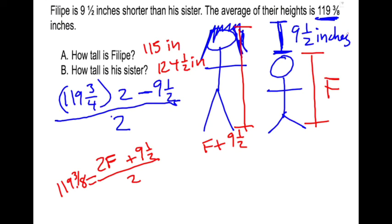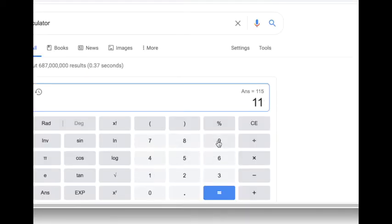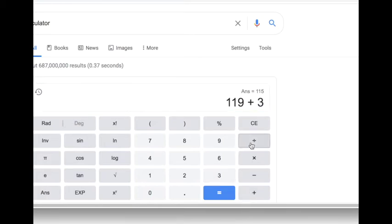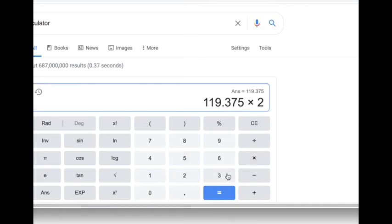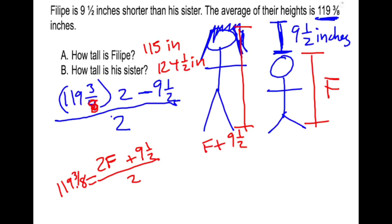All right, let's try this again. 119 and three-fourths times two minus nine and a half. Oh, there's my mistake. That four is supposed to be an eight. Three-eighths. 119 plus three-eighths times two minus nine point five. And then if I add the nine and a half inches will be 124.125.